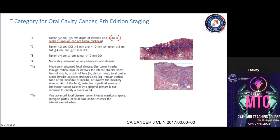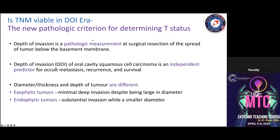The depth of invasion determines prognosis, not tumor thickness. In a deep infiltrative lesion, the depth of invasion is much greater than the tumor thickness, so its prognosis is worse even if tumor thickness is similar to another tumor. Depth of invasion is an independent predictor: greater depth of invasion leads to occult metastasis, higher recurrence, and worse overall survival.